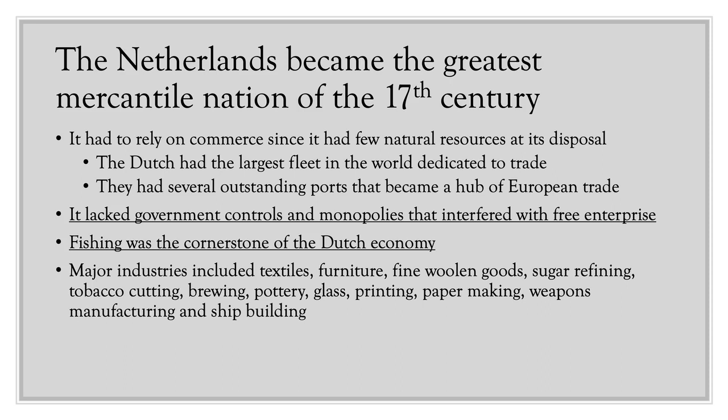Fishing was obviously a big cornerstone of the Dutch economy given how coastal the nation was. They were also really good at taking raw materials and transforming them into finished goods. Industries included textiles, furniture, fine wool and goods, sugar refining, tobacco cutting, brewing, pottery, glass, printing, paper making, weapon manufacturing, and shipbuilding. They had well-developed manufacturing industries in addition to dominating trade.